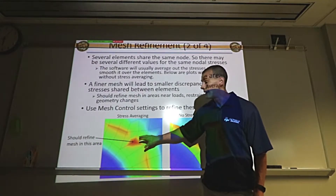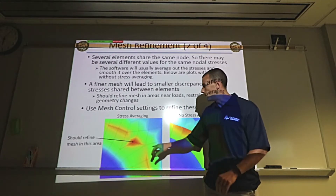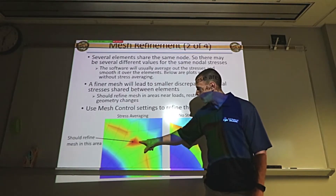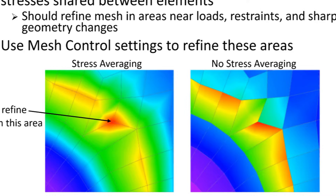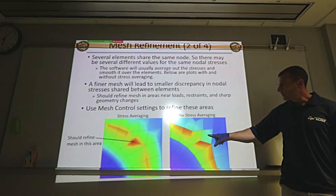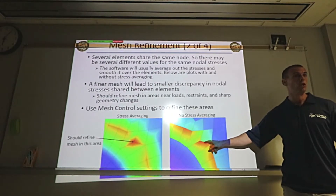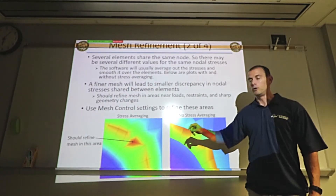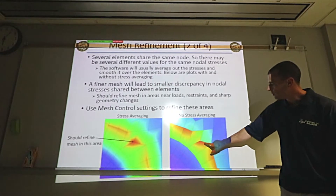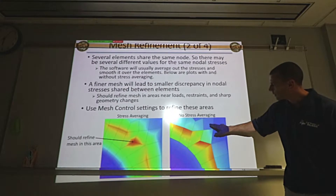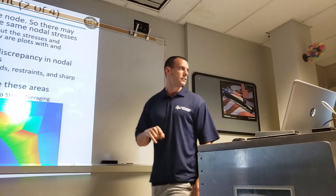I always recommend having the mesh visible when you look at your results — it might look nicer without the mesh, but it gives you better insight. For example, if the red stress region is over one whole element it's probably fine, but if it spans a couple of elements and you turn off stress averaging, you can see one element has low stress and the adjacent one has high stress. That means your mesh is too coarse to capture that transition and you need to refine in that area. You want elements that gradually blend from green to yellow to red — not a single element spanning that whole range.